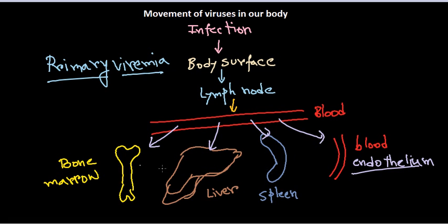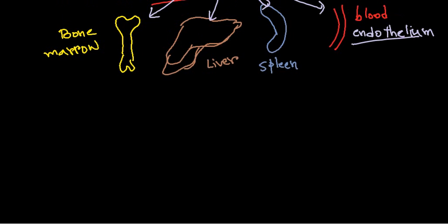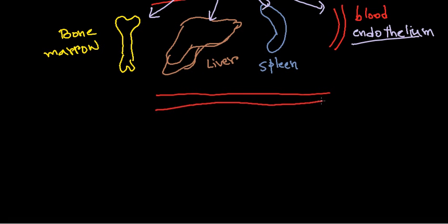If the virus moves further from these regions — bone marrow, liver, spleen — it reaches a second round of blood vessels. These organs are infection-fighting organs: bone marrow is the factory for producing immune cells, the liver is a very important organ, and the spleen also fights infection. In most infections the virus is halted, captured, and killed in these places. But if it succeeds in escaping these responses, it will migrate into a second round of blood circulation.